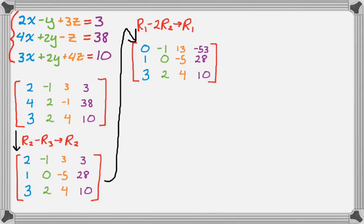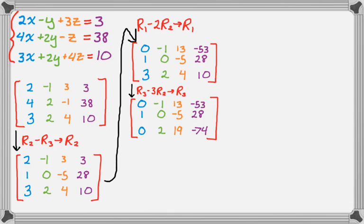Okay, so I don't know if it's getting better, but I'm going to keep going. So I'm going to do row 3 minus 3 times row 2, and that'll create another 0 in the first column, and that's progress. So row 2 and row 1 don't change. Now I have 3 minus 3 is 0, 2 minus 0 is 2, 4 plus 15 is 19, and then 10 minus 84 is negative 74.